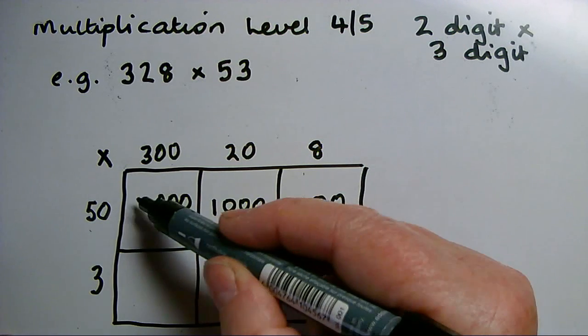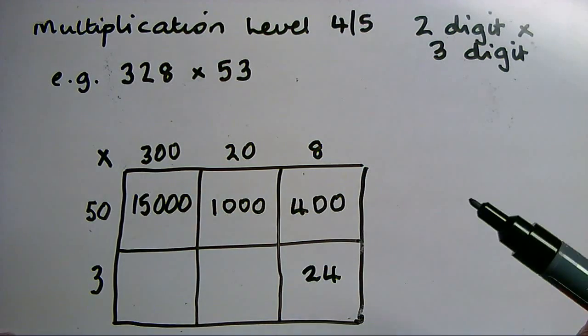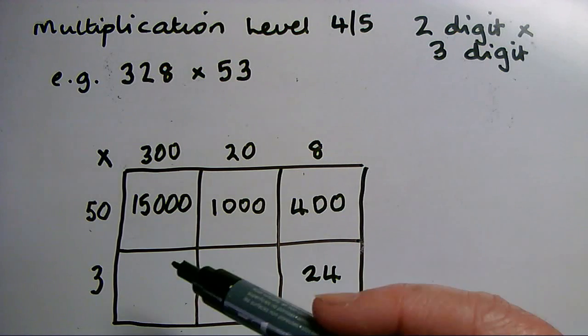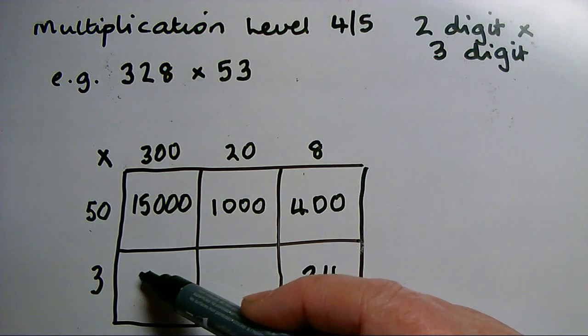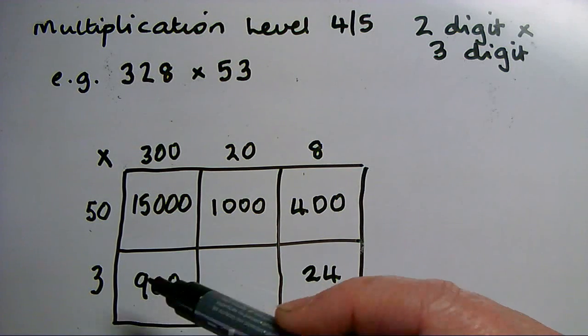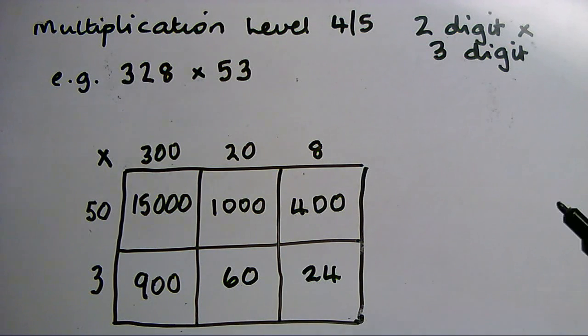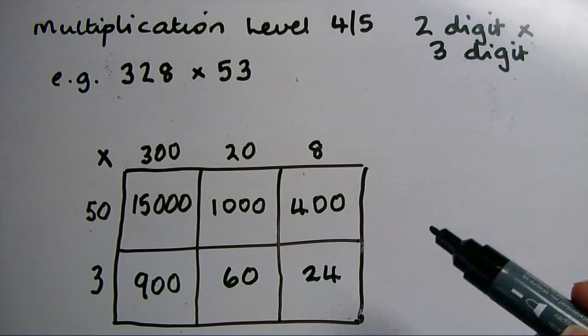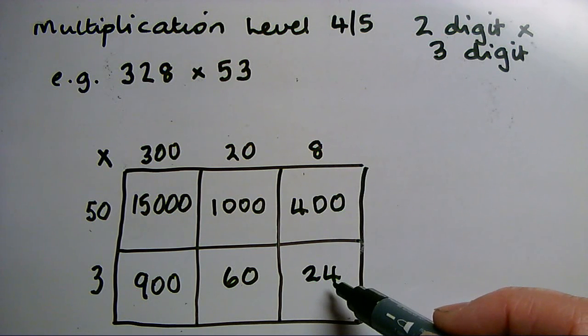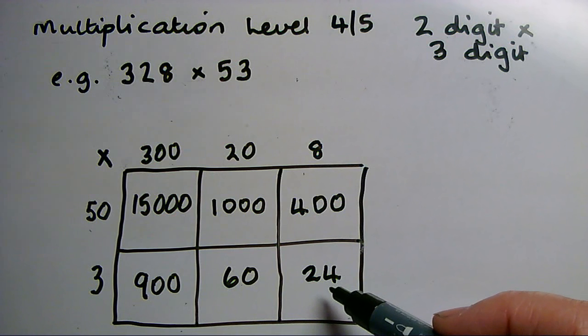...be three zeros, and then 5 threes is 15—it's 15,000. 3 lots of 300 is 900. 3 lots of 20 is 60. The only number that should ever have units in is this number in the bottom right-hand corner. All the rest will end in at least one zero, usually more.